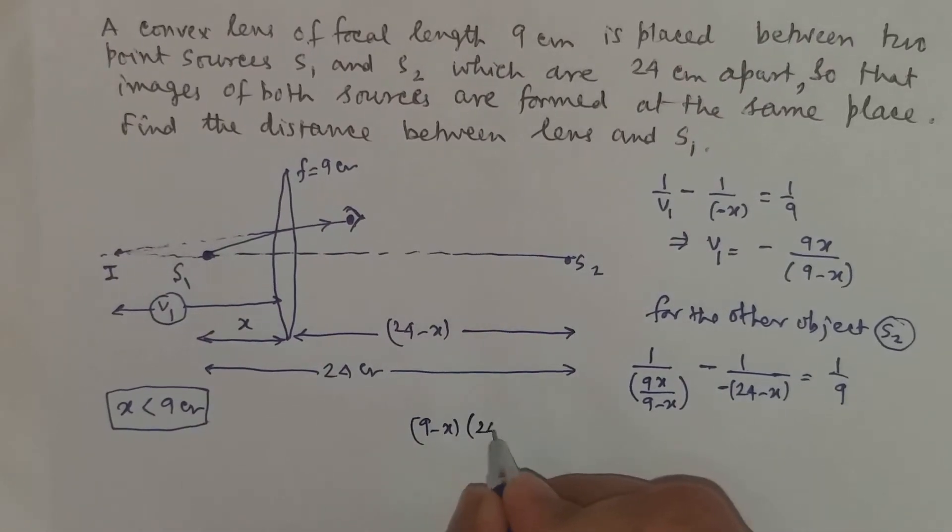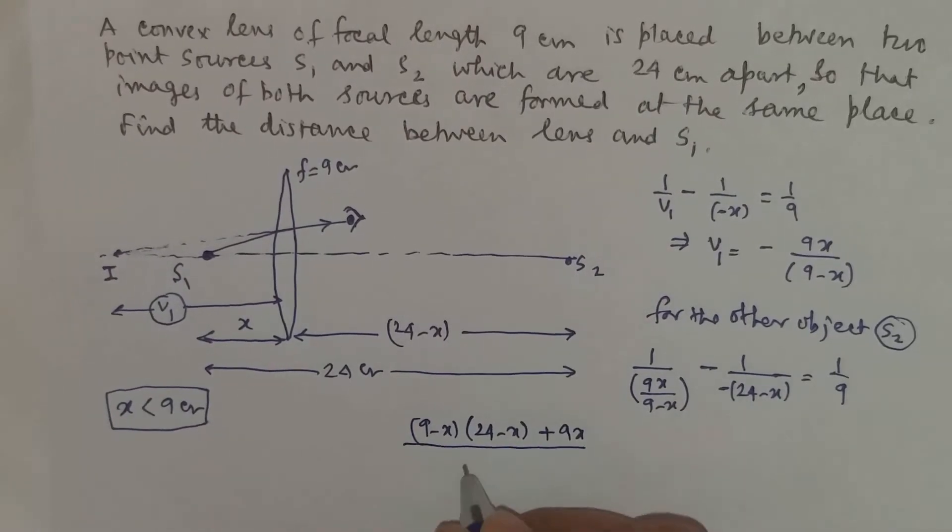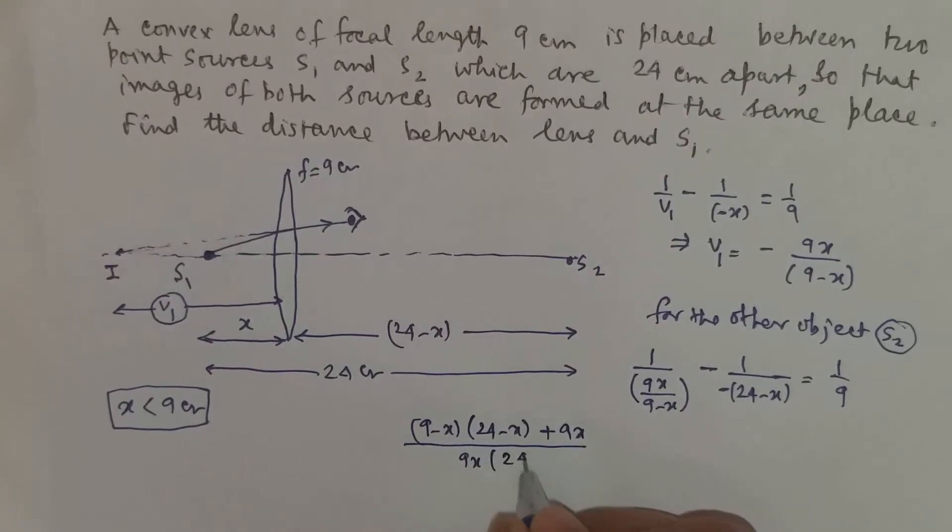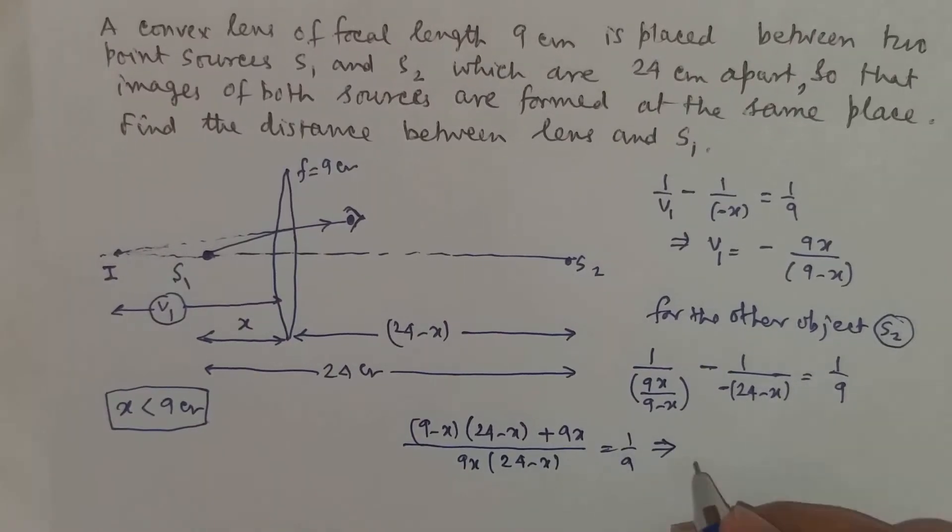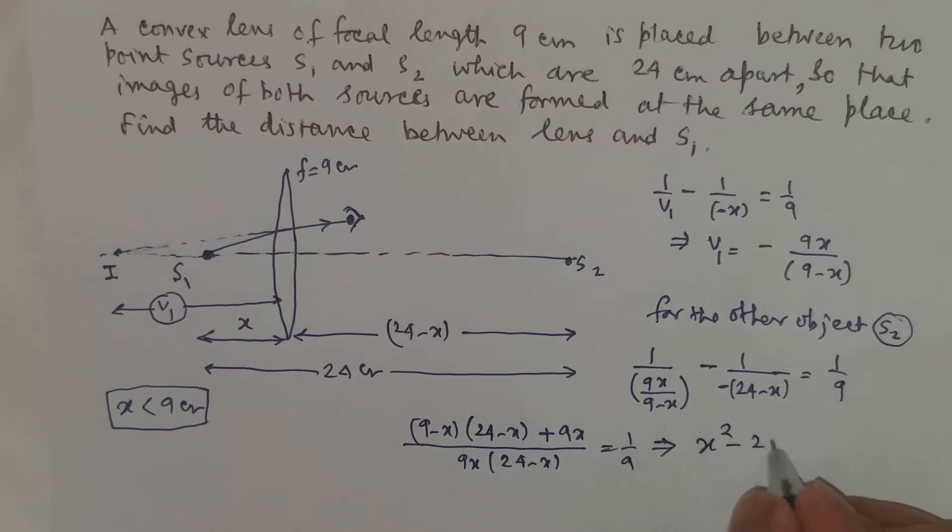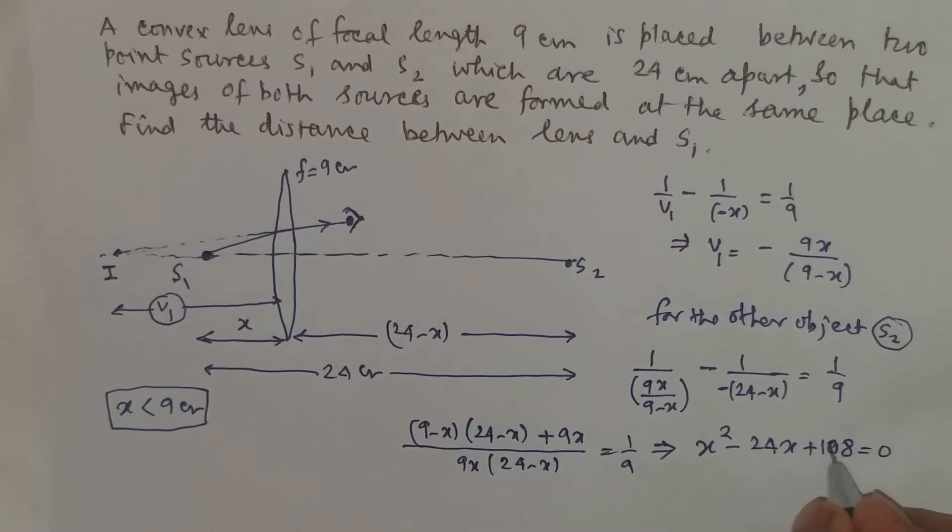And you have for the further solving, 9 minus x times 24 minus x plus 9x divided by 9x times 24 minus x is equal to 1 by 9. For that simplification will give you x square minus 24x plus 108 is equal to 0.